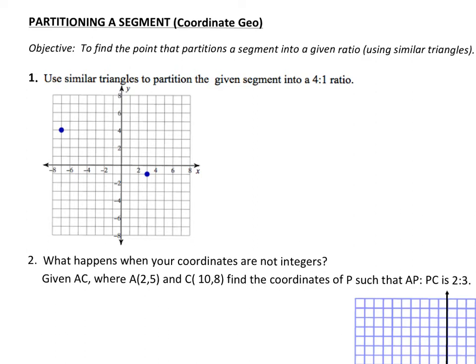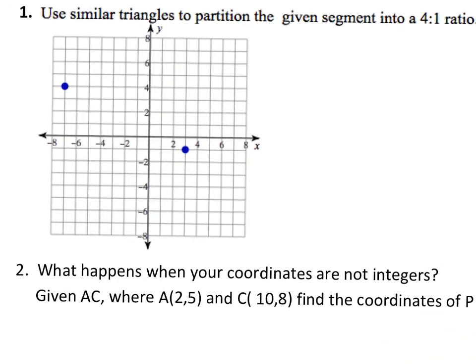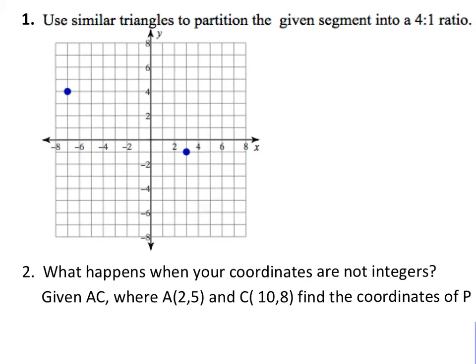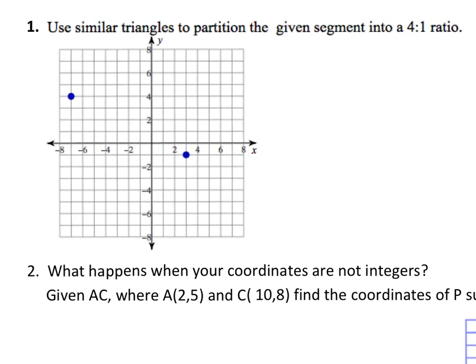We're going to revisit a topic involving partitioning a segment into two parts, but we're not going to divide it into two equal parts. That word 'partition' just means dividing. We want to make it so that it's in a ratio — the first one is going to be a ratio of four to one. I'd encourage you to try this one, pause the video if you haven't tried it yet. Just use some common sense and see what you can get from the graph.